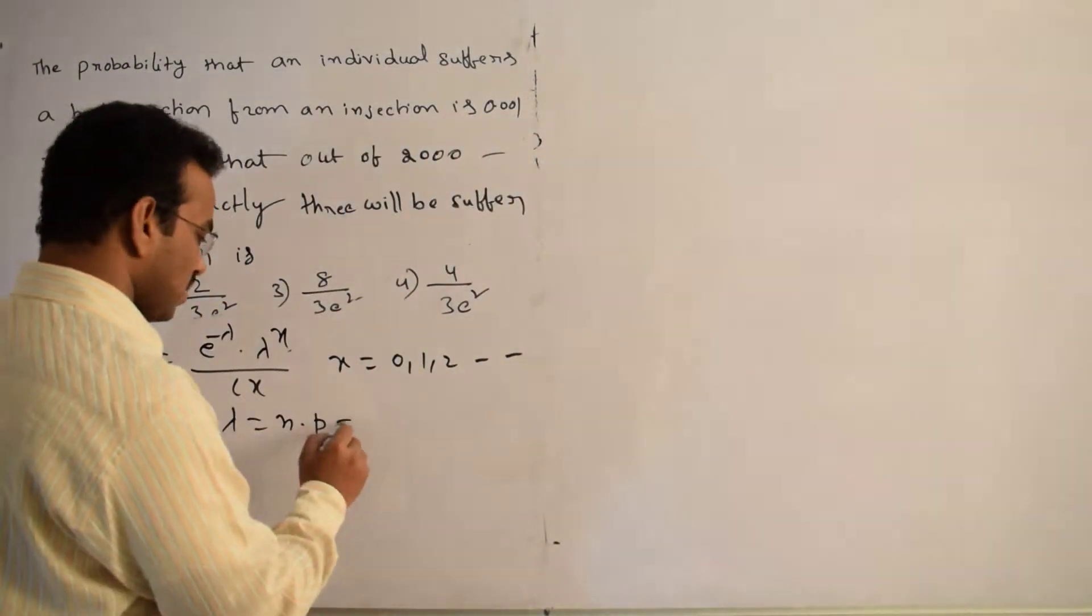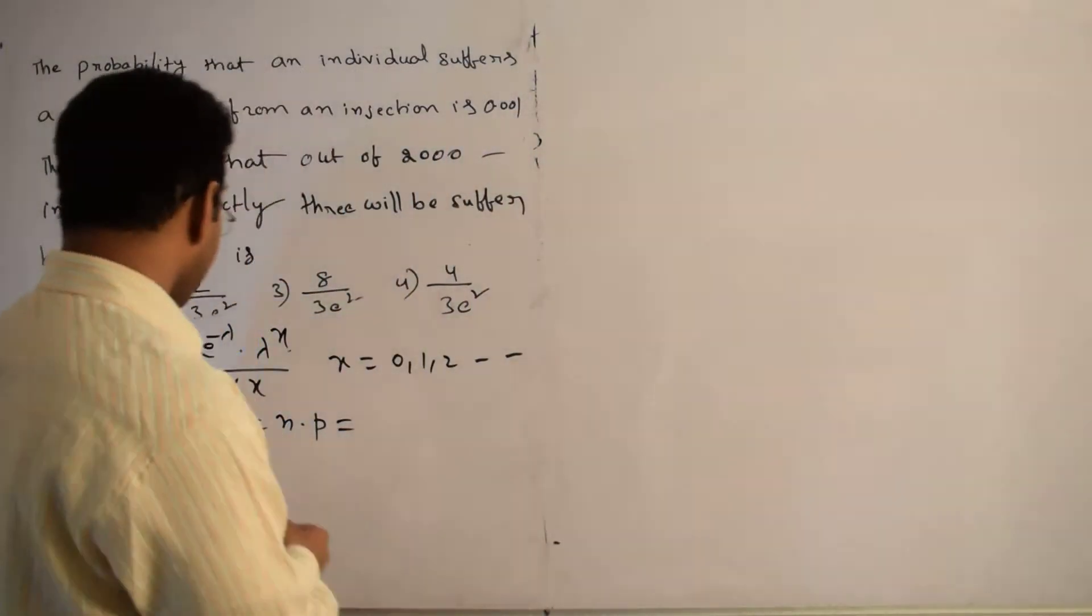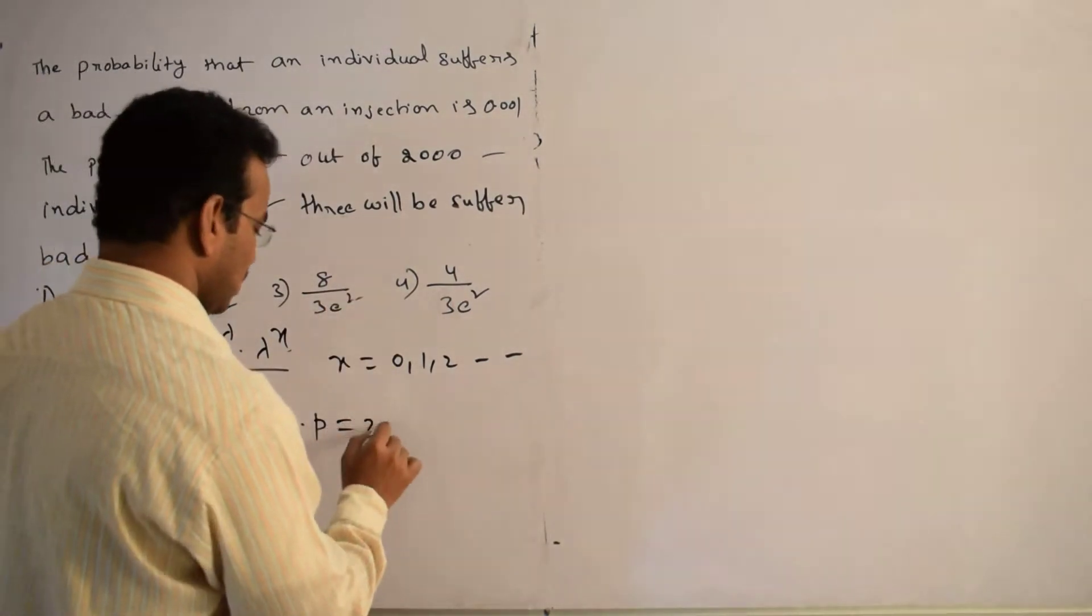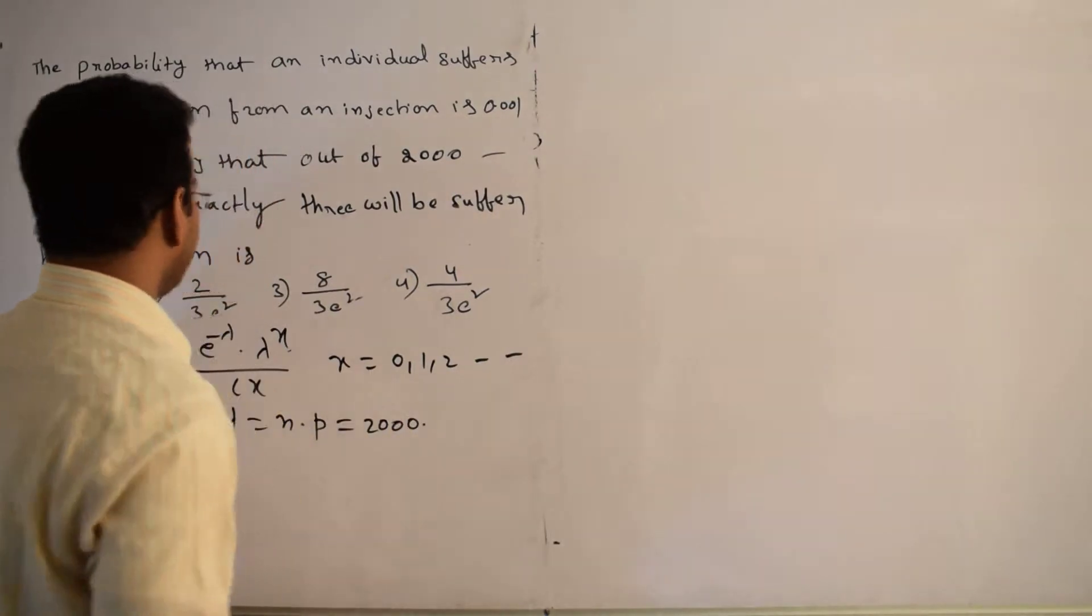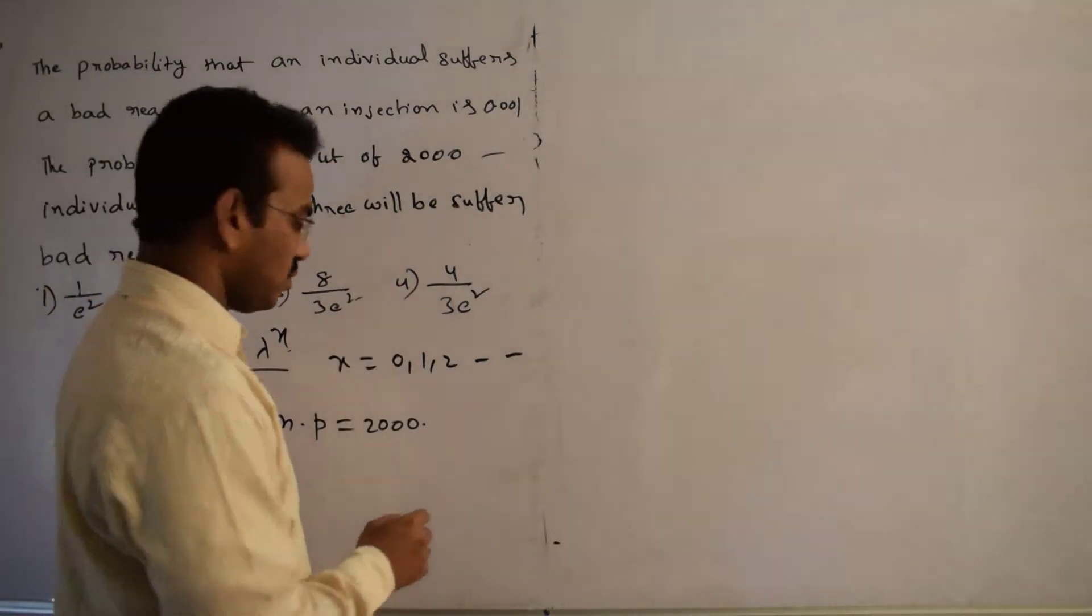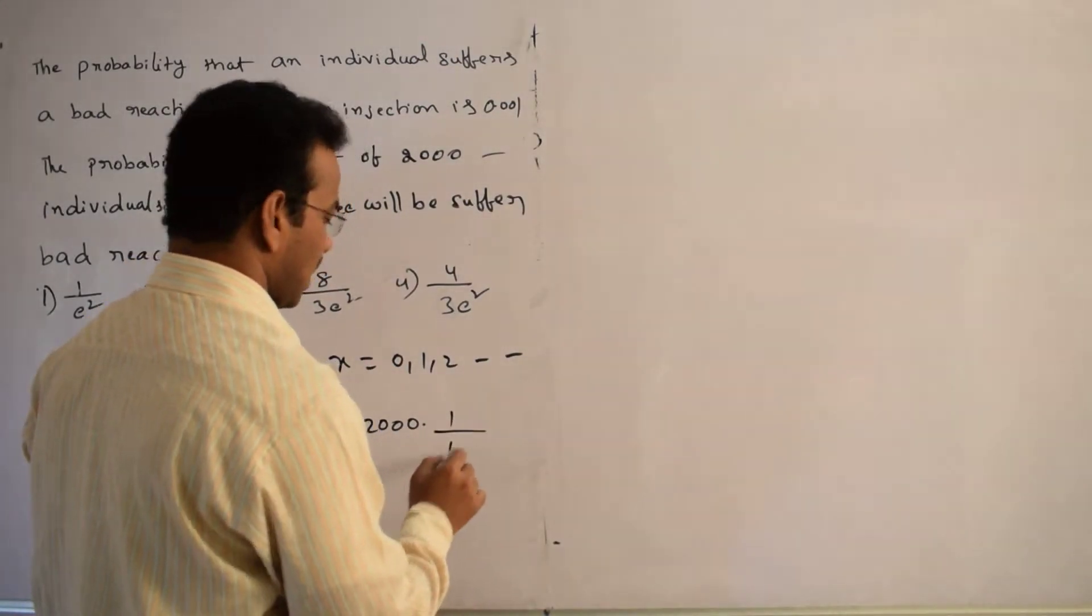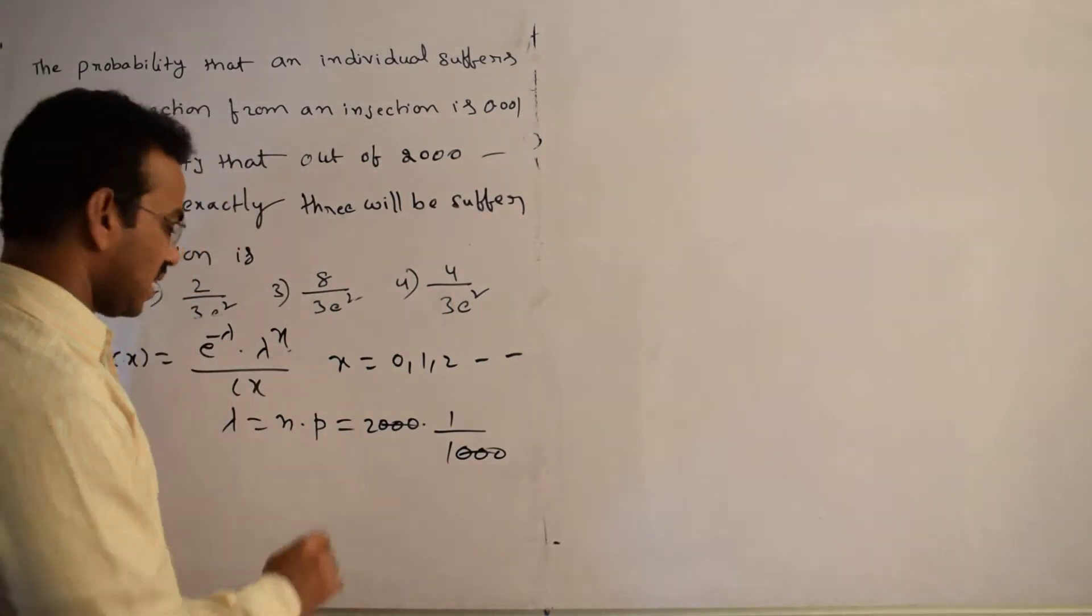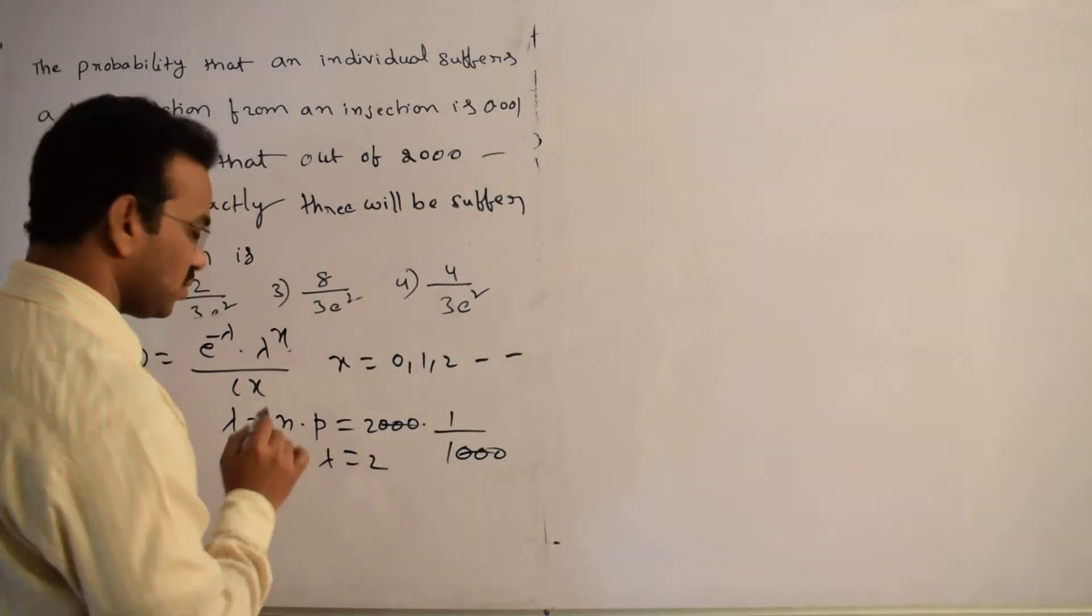Now, clearly they have given N value and p value. Let me substitute and we will get a lambda value. What is N? 2000. What is p? 0.001, which is 1 by 1000. Let me take 2000: three zeros get cancelled which equals 2. Lambda equals 2.